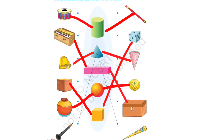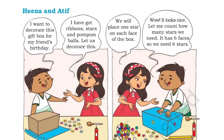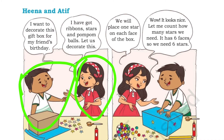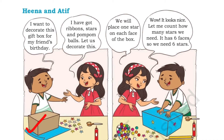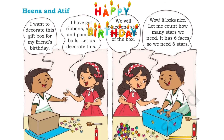Now we have completed matching the musical instruments with the solid shapes. Hena and Atif — look at this picture. There are two children gifting a box. Atif says: I want to decorate this gift box for my friend's birthday. There is a cuboid box which is in rectangular shape, and they want to decorate it for his friend's birthday.